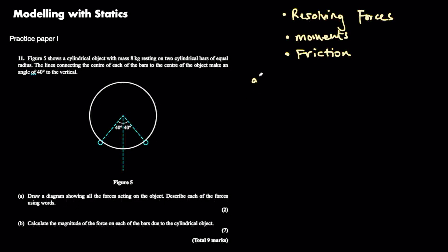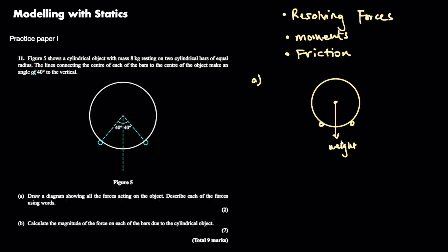For part A we need to draw a force diagram, something you learn to do in year 12. Draw your circle — sometimes it might say draw the forces on the diagram but here they're telling us to draw our own separate diagram. We have the center of the cylinder with a weight coming from the center, that would be mass multiplied by gravitational acceleration. We just need to write 'weight' there, and then we have the normal reaction forces pushing back on the cylinder from these rods.